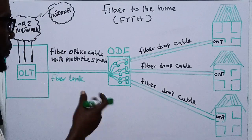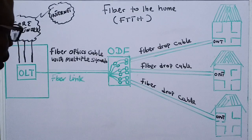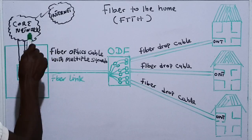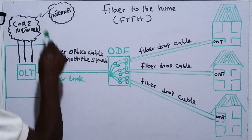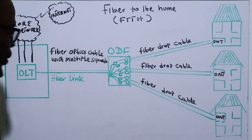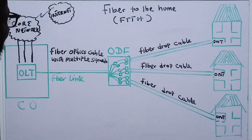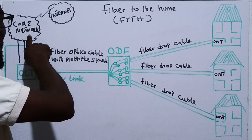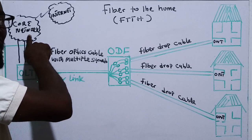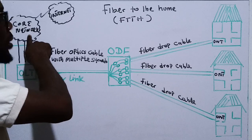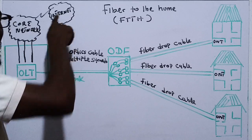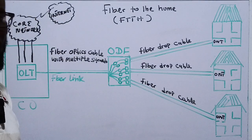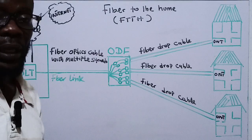Looking at this network topology here, this is the telecommunication central office, CO. This is their core network where you have layer three switches and routers connected to the internet.